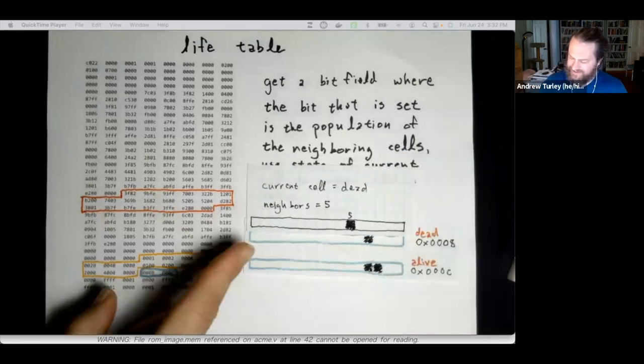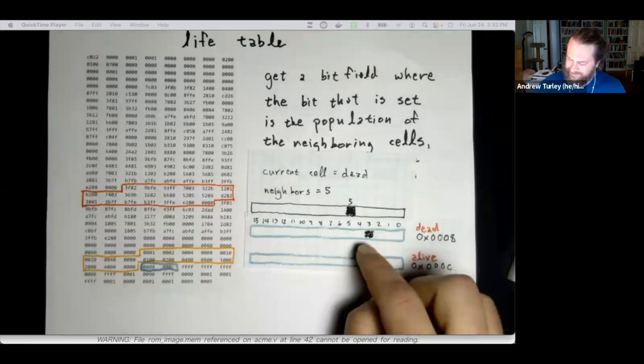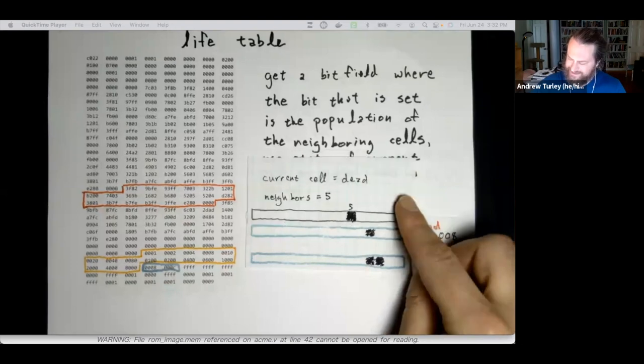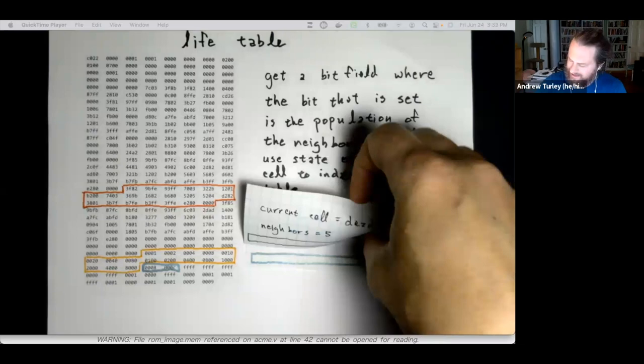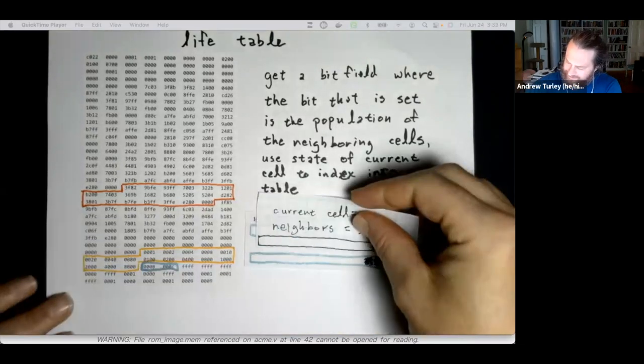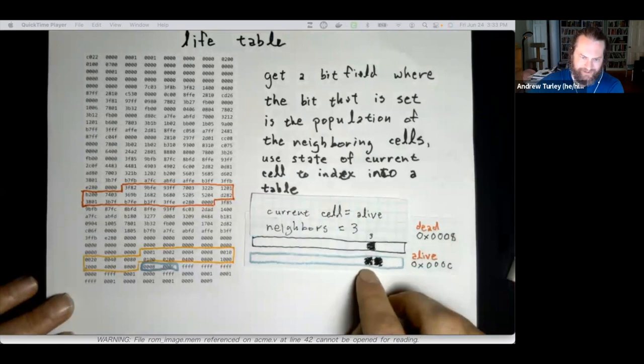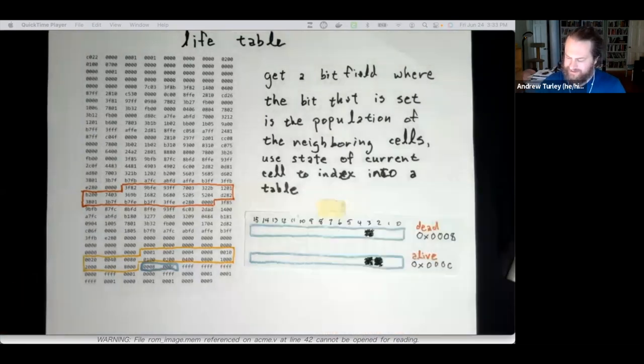So if I have a current cell that's dead and it has five neighbors, I compare it to my dead part of the array. And I see that these things don't line up, so it's not going to be alive in the next generation. If I have a current cell that's alive, I compare it to the alive part of the array. And I see that two and three are possible values. So I get a one when I AND these two together. And I know that my cell is alive in the next generation.